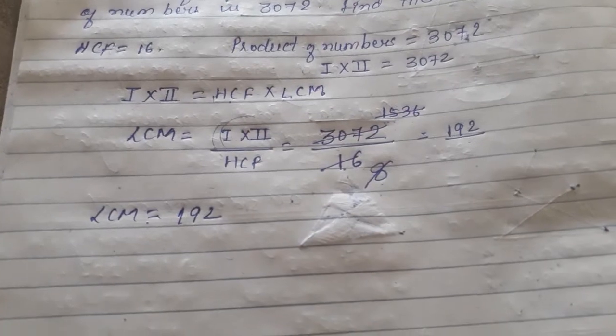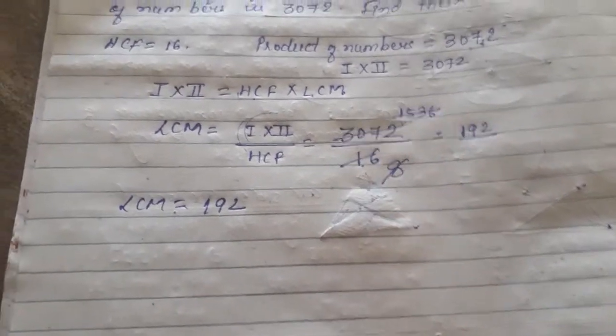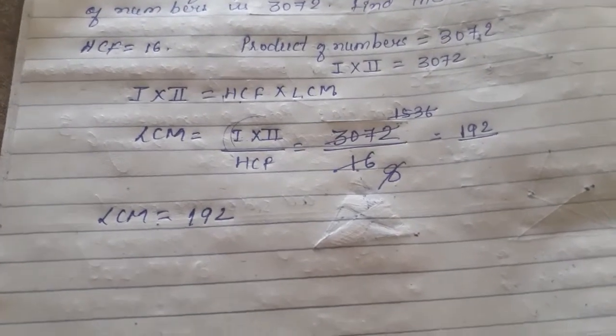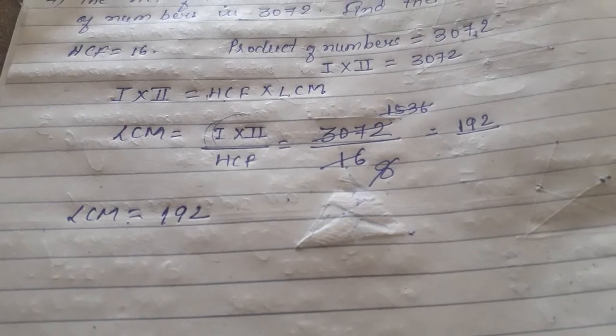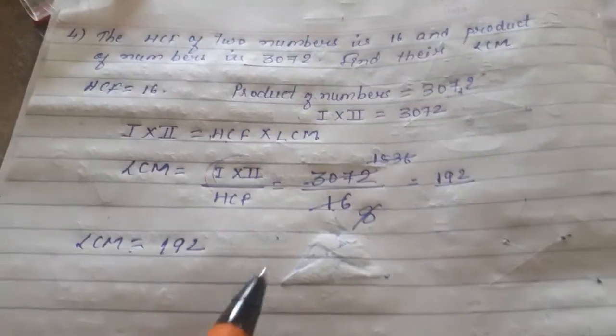And you can check this. If you found the HCF of both numbers, we won't be able to find it because we have the product of the numbers given. Okay? So we don't know which numbers they are. We are directly given product of the numbers. And HCF was given as 16. You can check.